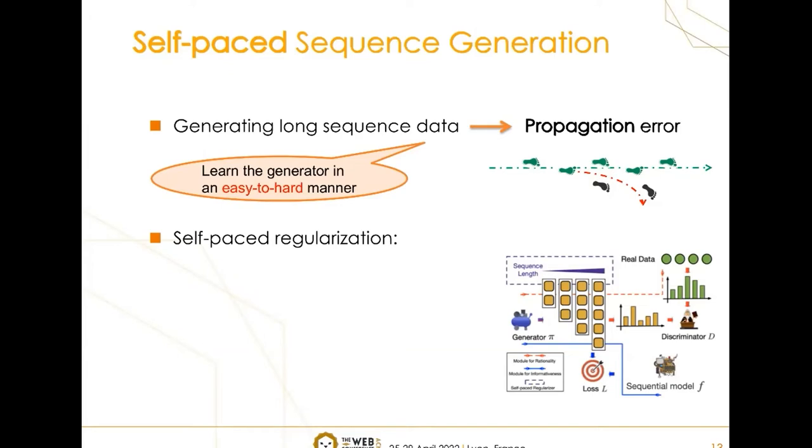Specifically, we first learn the generator to produce shorter sequences, which is relatively easy. Once the generator can produce good samples, we then move to the longer ones, which is more difficult.